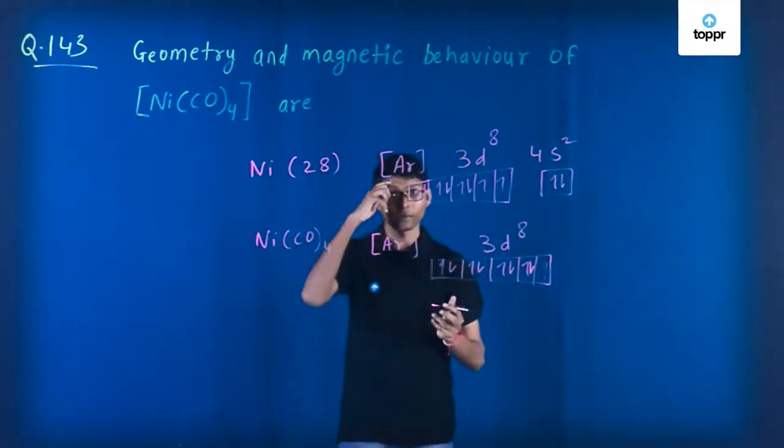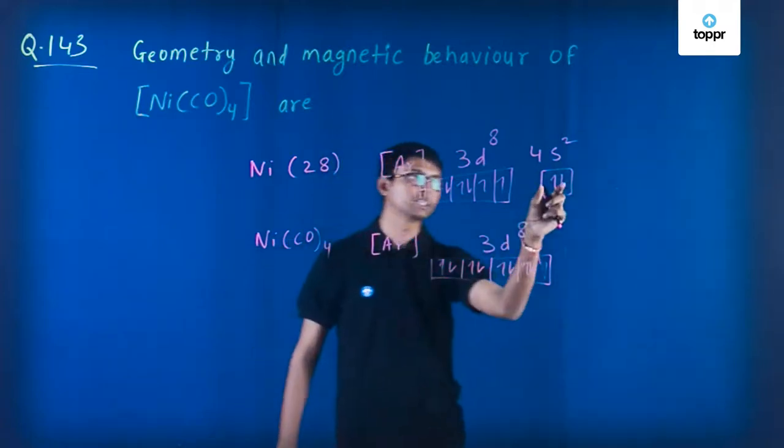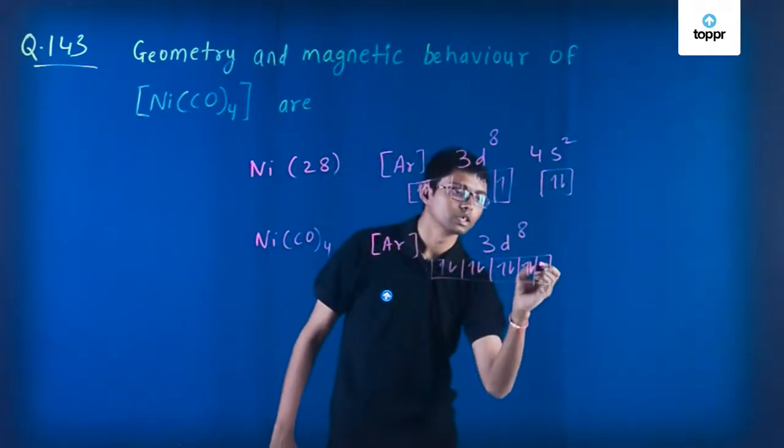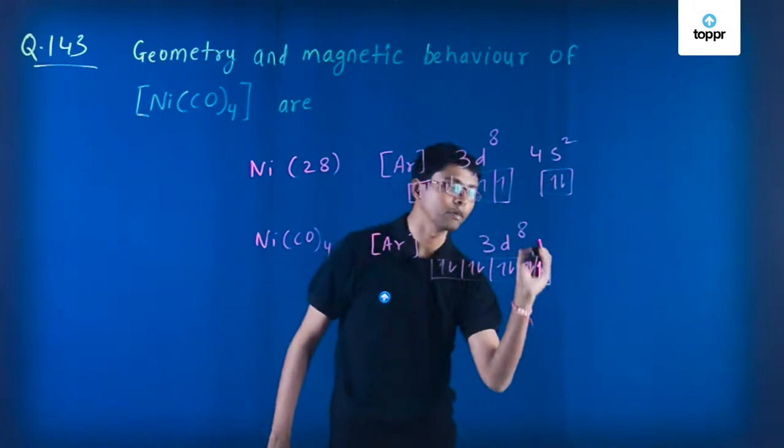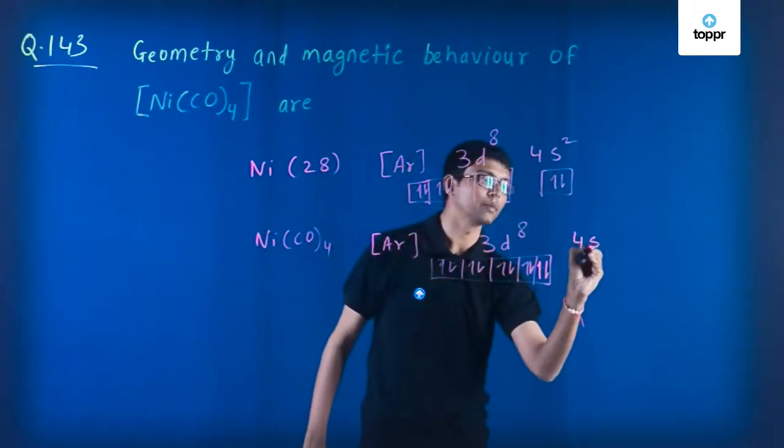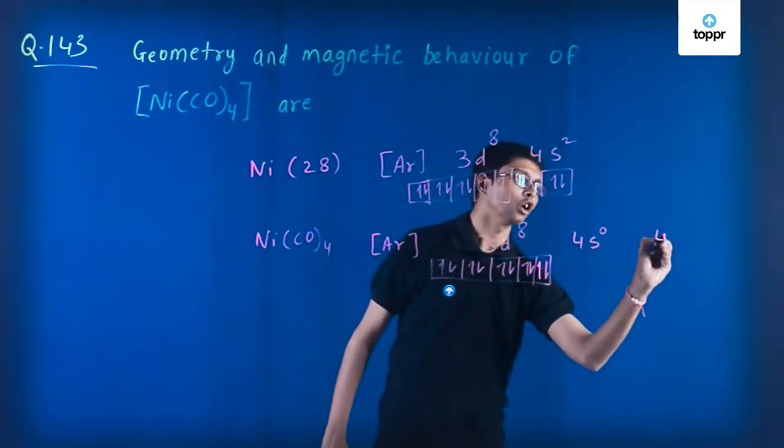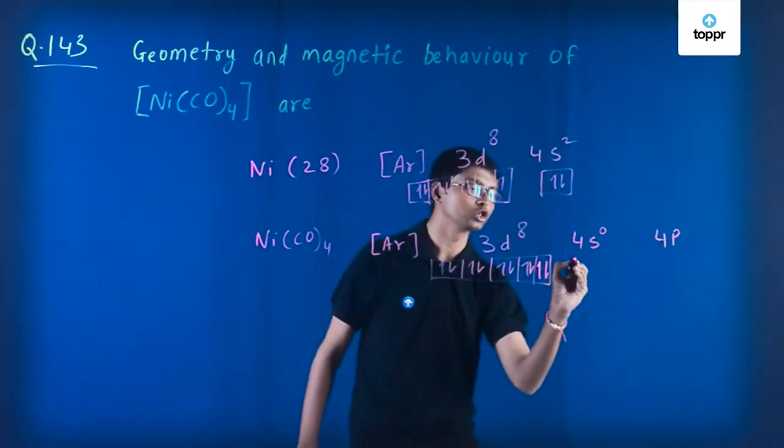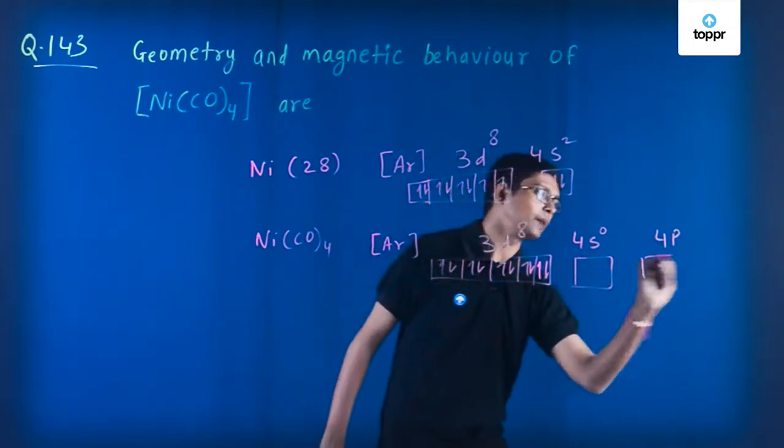Now the strong field ligand carbonyl also shifts these electrons of 4s to this 3d subshell. Then it will be like this: the 4s subshell will be empty and there will also be a 4p subshell which will also be empty.